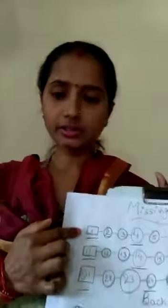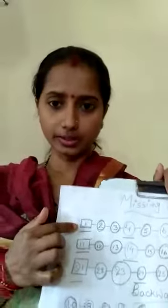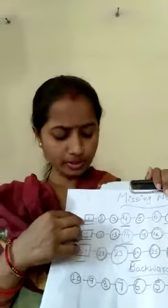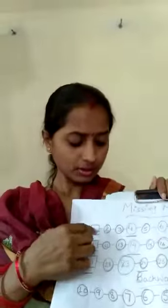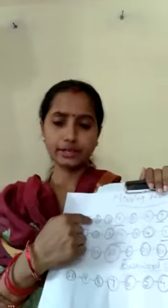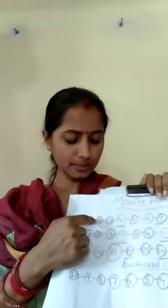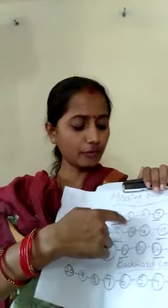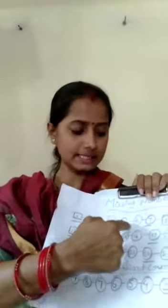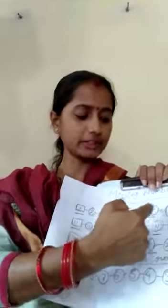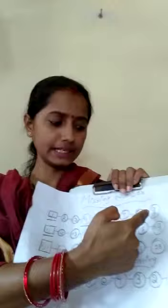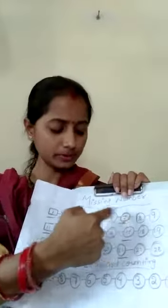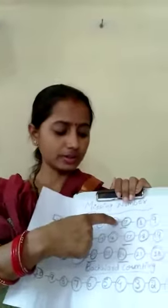I am writing here 1. Okay? What is the next number after 1? 2. And what is the next number after 2? 3, 4, 5, 6, 7, 8, 9. This is a carry forward number. This is your missing number.